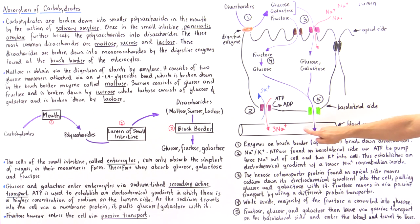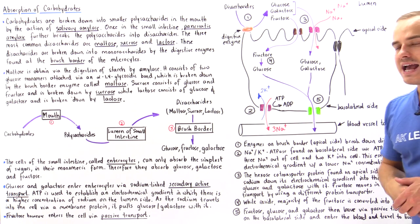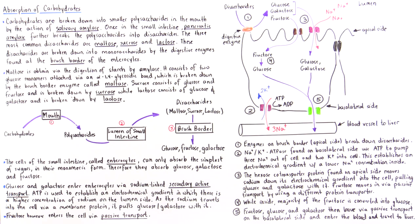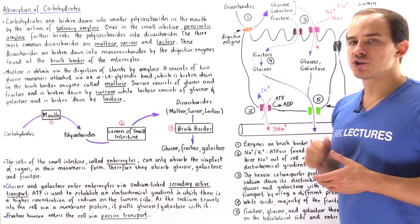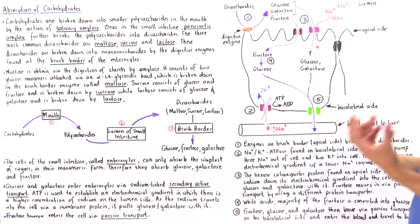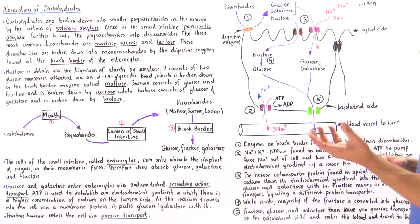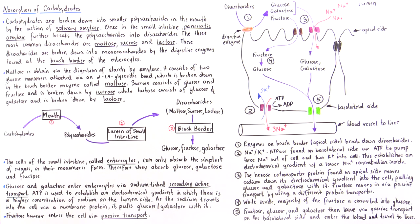Eventually, they enter the blood vessel and travel via our hepatic portal vein into our liver, where the liver stores glucose in the form of glycogen — the polysaccharide stored inside the cell.